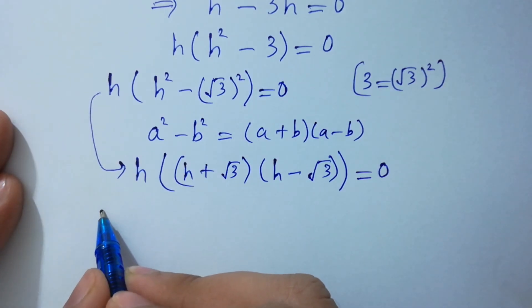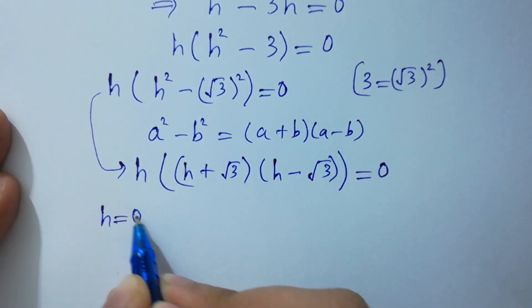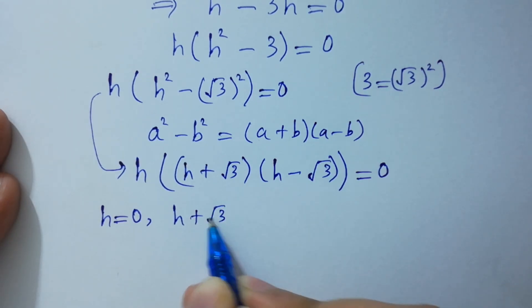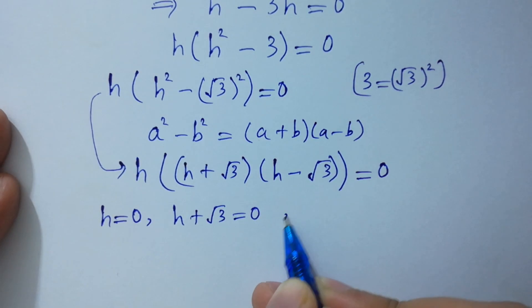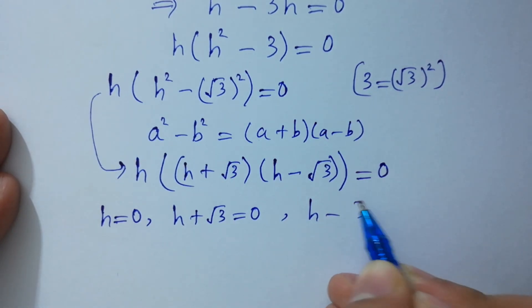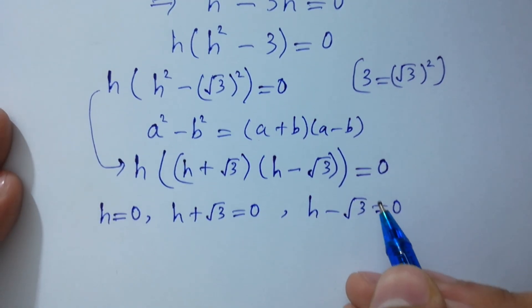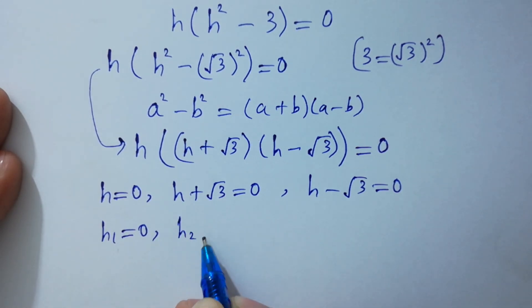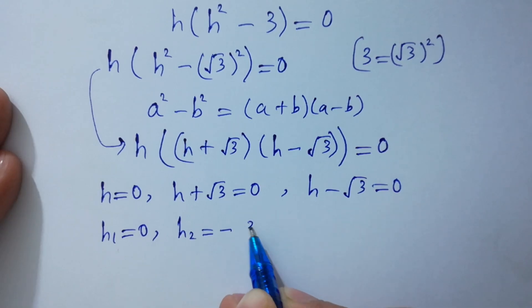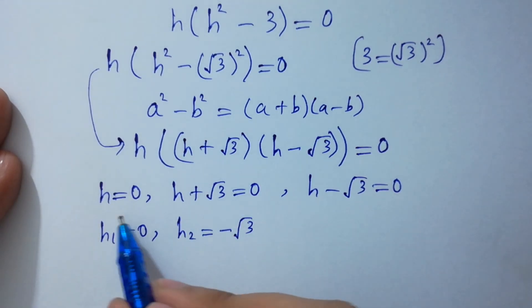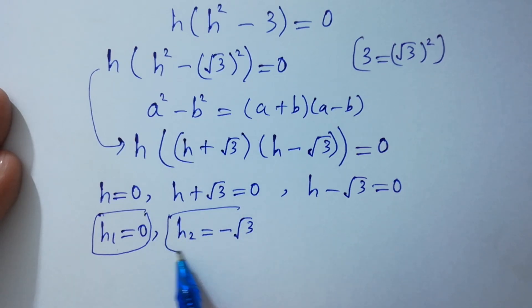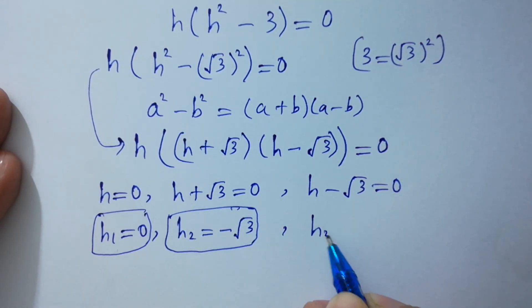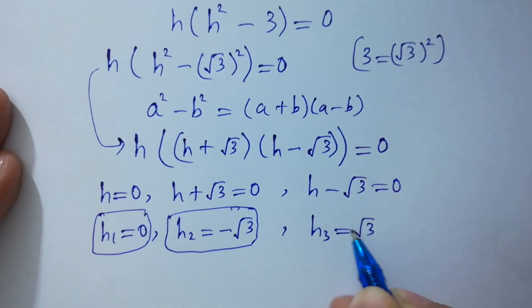So h equal to 0, and h minus square root of 3 equal to 0 gives h2 equal to negative square root of 3, and h3 equal to positive square root of 3.